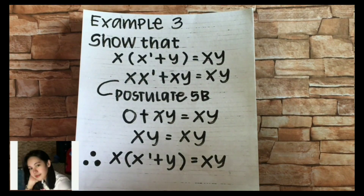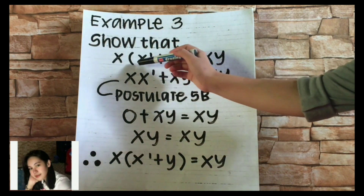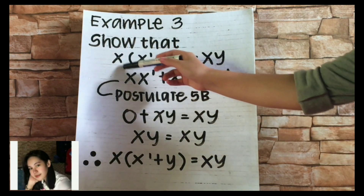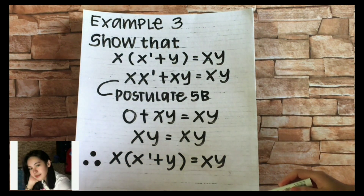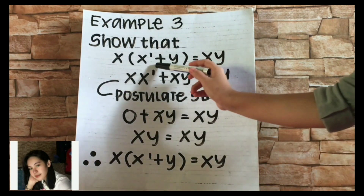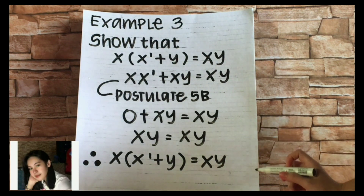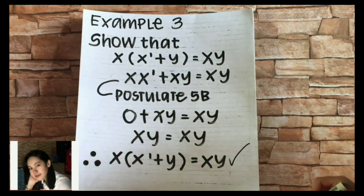Such a detailed explanation. Do you think our listeners are starting to understand the topic? I'm sure they are starting to enjoy it. For example number three, show that x · (x' + y) = x·y. Applying the distributive property on the left term, we have x·x' + x·y = x·y. Cancelling x·x' as it equals zero, we have 0 + x·y = x·y. We can see that x·y = x·y, which therefore proves that x·(x' + y) = x·y is true.